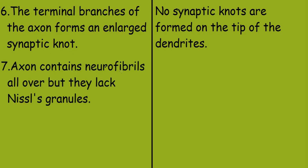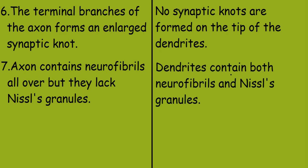Axon contains neurofibrils all over but lacks Nissl granules. Dendrites, however, contain both neurofibrils and Nissl granules.